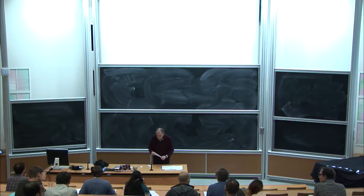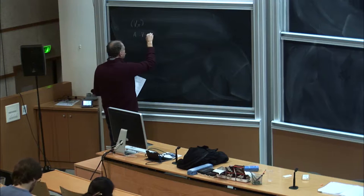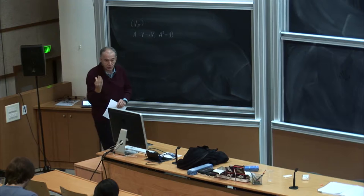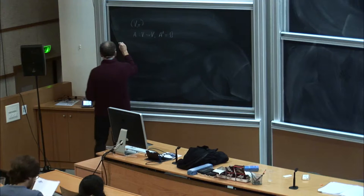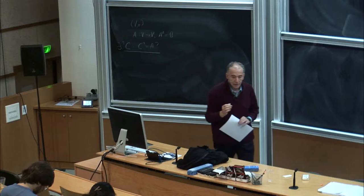Last time we tried to solve the following problem. We have a persistence model V pi, and we had a morphism a from V to V such that a squared equals 1. What we tried to do was extract a square root from this morphism — is it possible to find c such that c squared equals a? This was the original motivation.